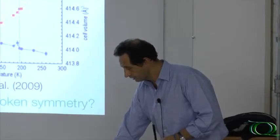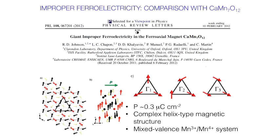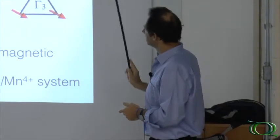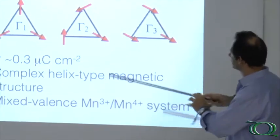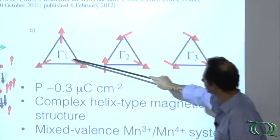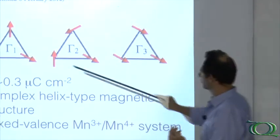Just for comparison, recently other evidence of what is called giant — let's say large — ferroelectricity has been reported. They obtain about 0.3, which is about the same value, but this is obtained in single crystals at saturation, while we expect at least one microcoulomb or even maybe 10. In this case, it's not easy to understand the coupling between ferroelectricity and magnetism because the magnetic structure is formed by three irreducible representations.